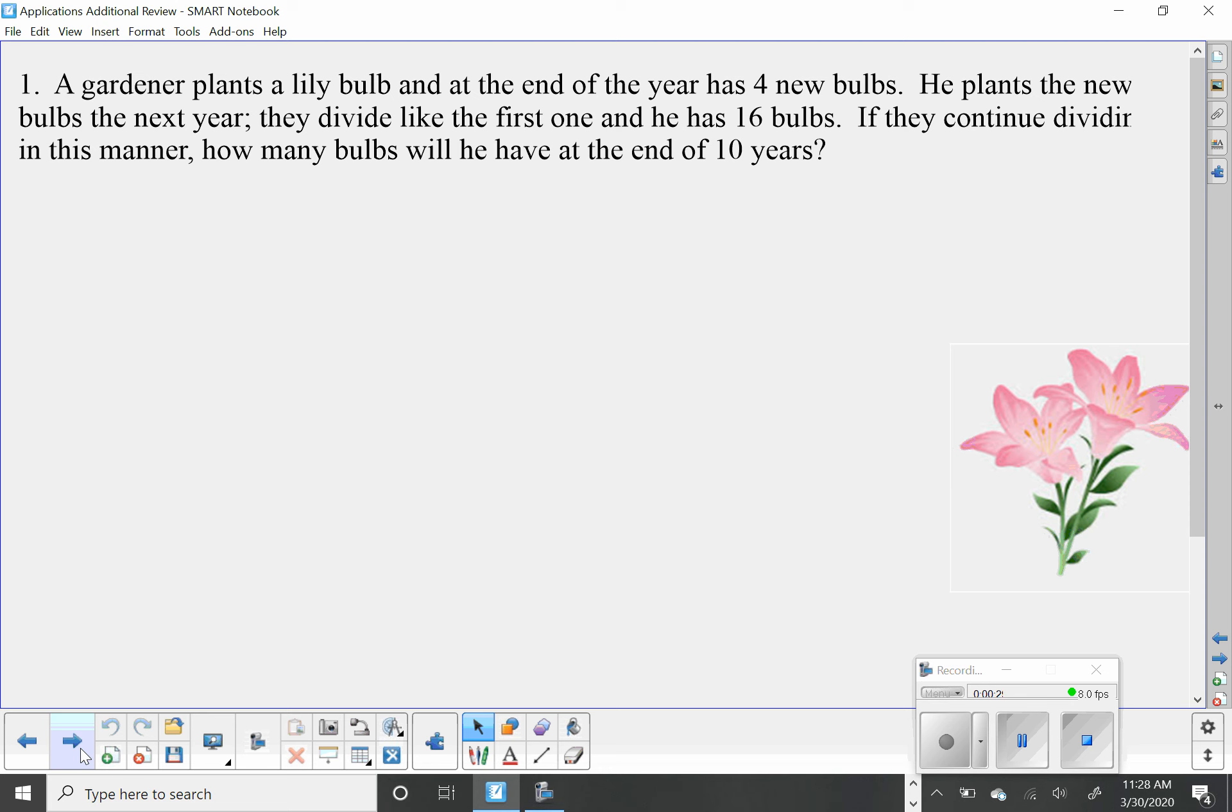This first one: A gardener plants a lily bulb at the end of the year and has four new bulbs. He plants the new bulbs the next year. They divide like the first one, and he has 16 bulbs. If they continue dividing in this manner, how many bulbs will he have at the end of 10 years?